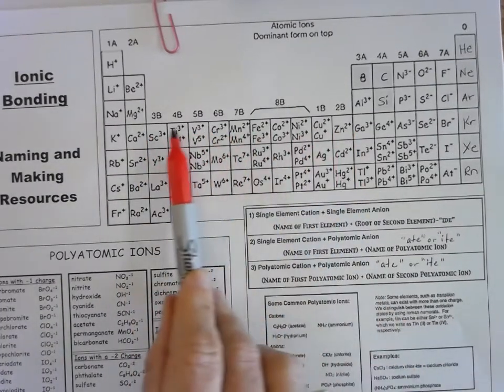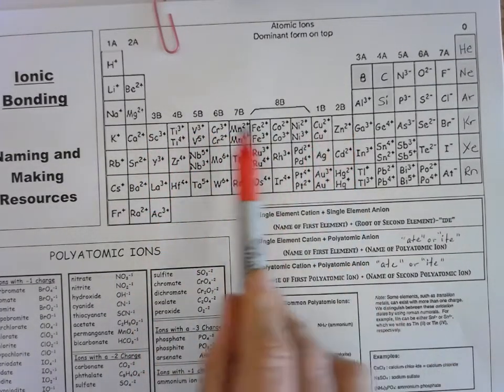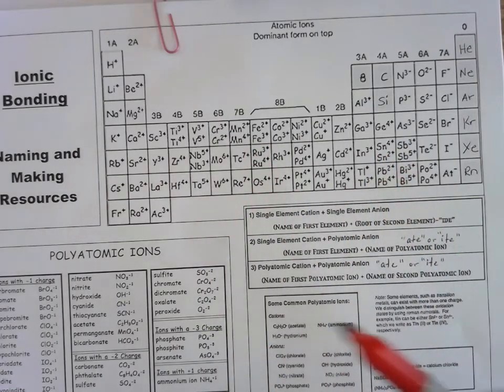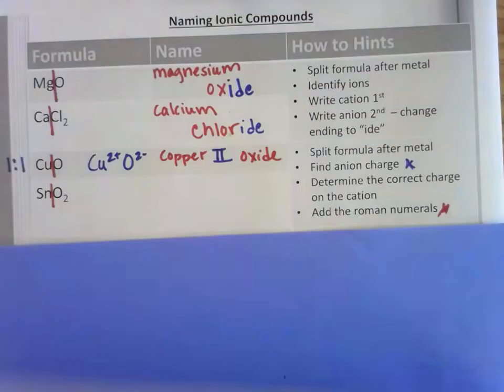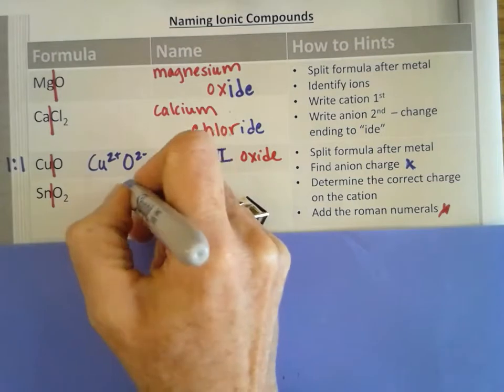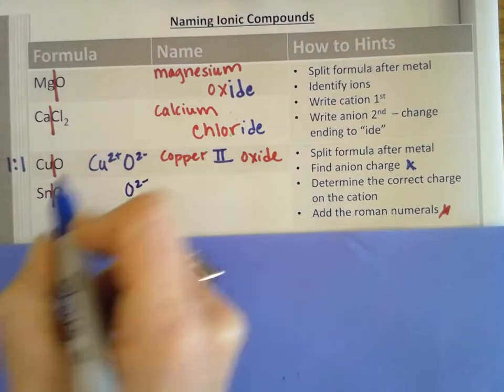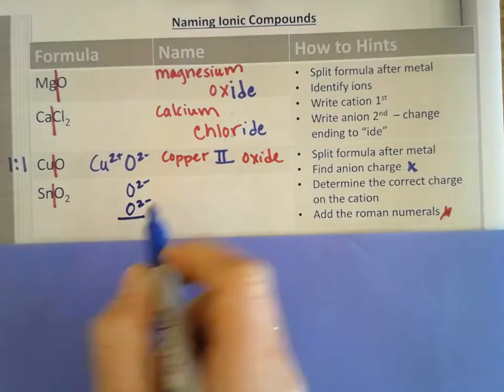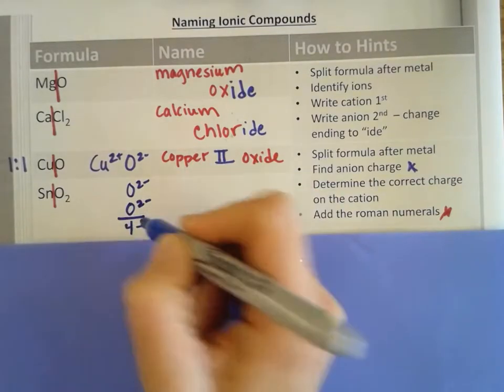So I have O and it's still O2, but this time I have two of them because of that subscript. So my total for negative charge is four negative.